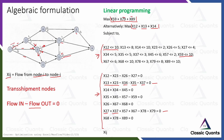We can verify the same for node 7. The flow into node 7 consists of x27, x37, x57, and x67 — four incoming flows. The flow out of node 7 consists of x78 and x79. So flow in minus flow out equals zero: (x27 + x37 + x57 + x67) − (x78 + x79) = 0.